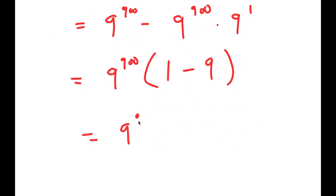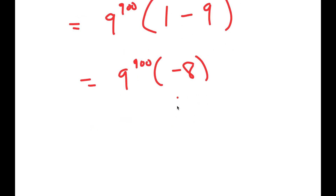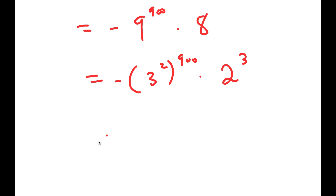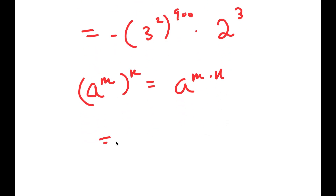This is equal to 9 to the power of 900 times negative 8. So now I'm going to move the negative sign to the front, so I get negative 9 to the power of 900 times 8. To fully simplify this, I'm going to write 9 as 3 squared, so I get negative 3 squared to the power of 900, and I'm going to write 8 as 2 to the power of 3. If I have something in the form a to the power of m to the power of n, this is equal to a to the power of m times n. So I get negative 3 to the power of 1800 times 2 to the power of 3.